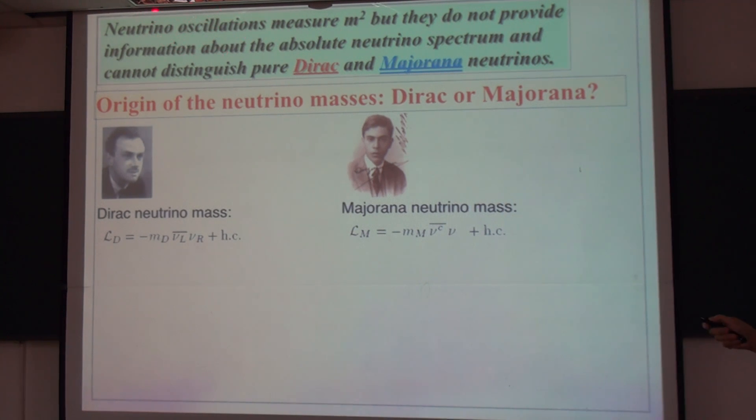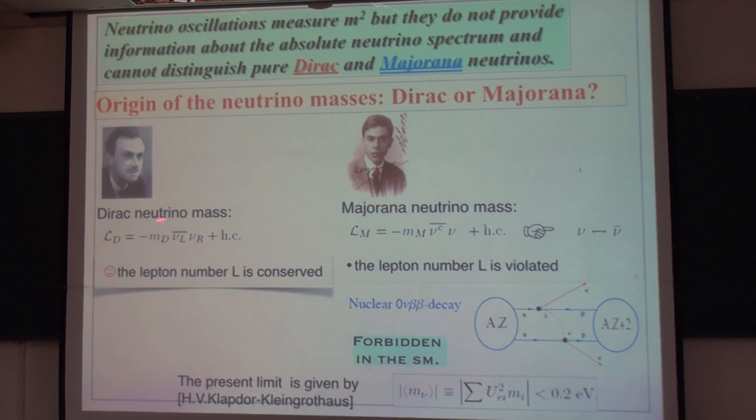Neutrino oscillation measures the mass square and does not provide information about absolute neutrino spectrum. And therefore, cannot distinguish whether neutrino is a Dirac or a Majorana neutrino. So what is the origin of neutrino masses? Are neutrinos Dirac or Majorana particles? This is a Dirac particle, this is a Majorana particle. If neutrino is a Dirac particle, the lepton number is conserved. If it's a Majorana particle, the lepton number is violated, and the violation of lepton number could induce neutrinoless double beta decay.